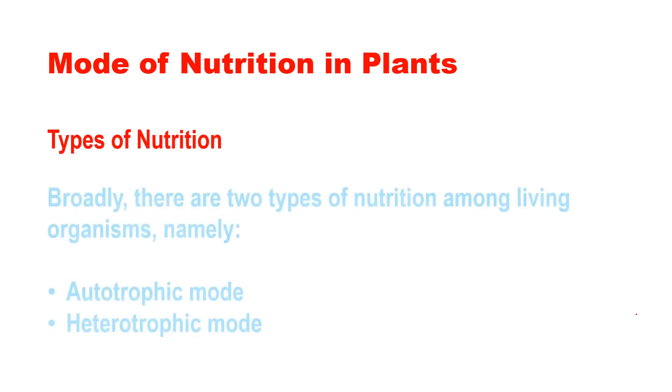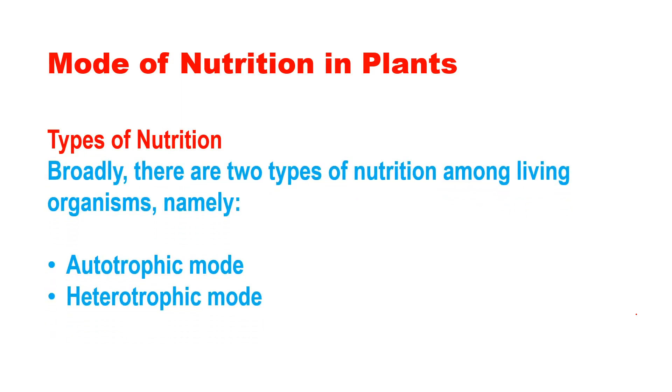The method of obtaining food is different in different organisms, and hence we divide the mode of nutrition into two types. The first is autotrophic mode of nutrition and the second is heterotrophic mode of nutrition. In today's video, we are going to talk about the first one — that is the autotrophic mode of nutrition.